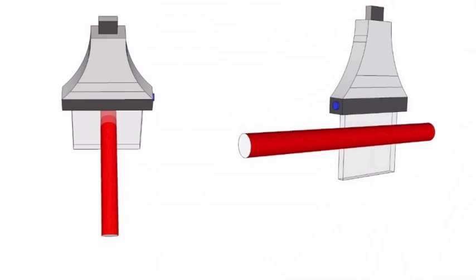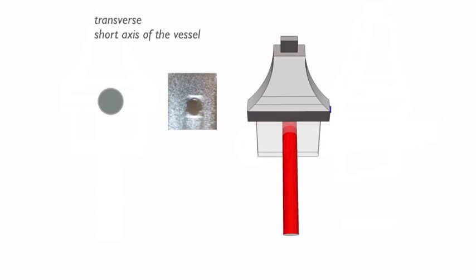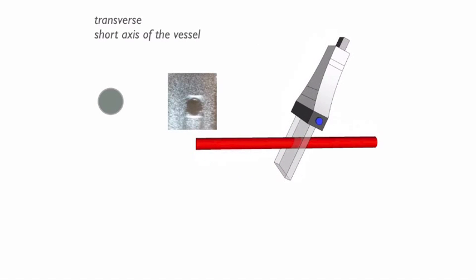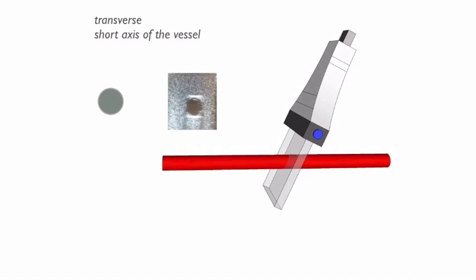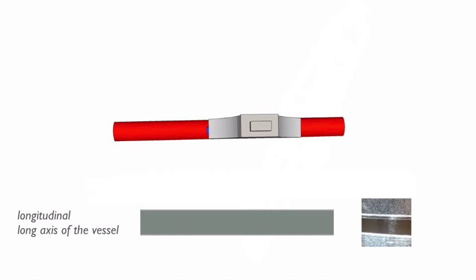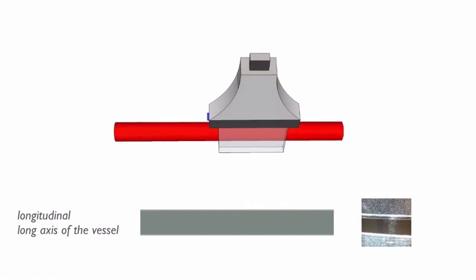You will be scanning limbs in search of suitable veins in either transverse or longitudinal plane. In the transverse plane, you will see the short axis view of the vessels and they will appear as circles on the screen. In the longitudinal plane, you will see the long axis view of the vessels and they will appear as tubular structures.